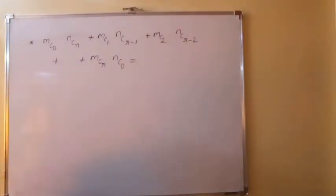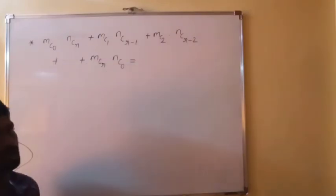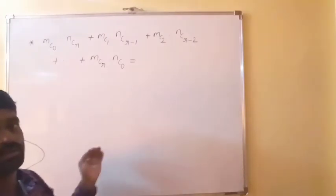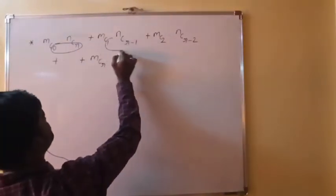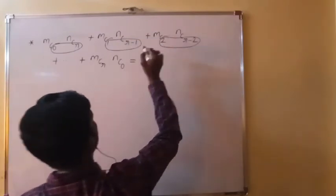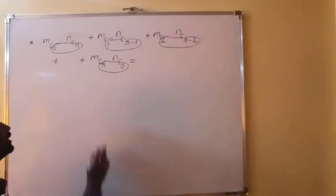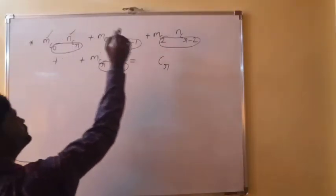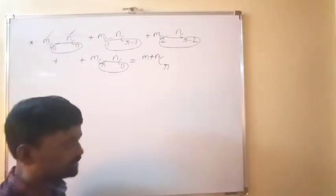Next result: MC0·NCR + MC1·NCR-1 + ... + MCR·NC0 = M+NCR. Observe that in M terms the subscripts increase 0,1,2,...,R and in N terms they decrease R, R-1,...,0. In every term the sum of the subscripts is constant R. In the answer, add the two tops: M+N, and keep subscript R. So the answer is M+NCR.